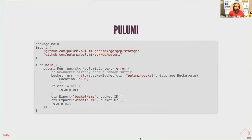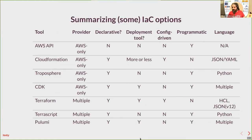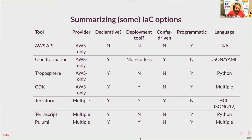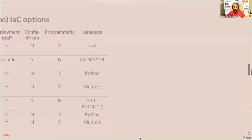We'll cover Pulumi in more detail in the last section during the comparison. Here's a table that tries to summarize all the solutions in this section — the slides will be shared so you don't need screenshots. I'm categorizing the solution space by whether they are programmatic or not, declarative or imperative, and whether they come with a deployment tool or need another one. That's a summary of what we've already described.